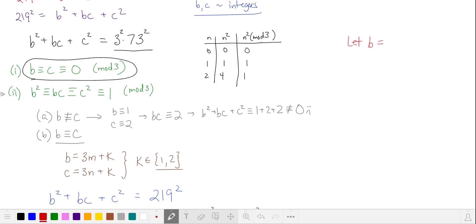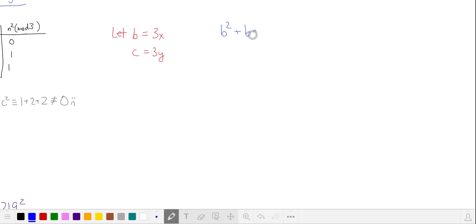Since b and c are multiples of 3, we'll let b be 3x and c is 3y. And again, our equation is b² plus bc plus c² is equal to 9 times 73², substituting and dividing by 9. Something interesting happens to the left hand side when we factor y².